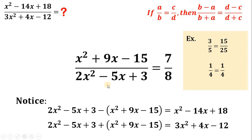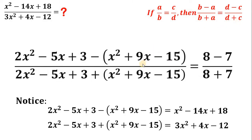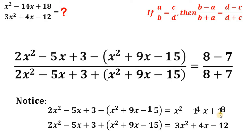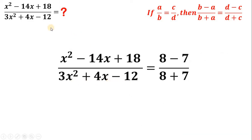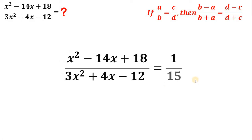Let's use this identity to answer the question. Applying b minus a over b plus a equals d minus c over d plus c, we get exactly the expression we want to evaluate: x squared minus 14x plus 18 over 3x squared plus 4x minus 12. On the right-hand side, 8 minus 7 gives 1, and 8 plus 7 gives 15.